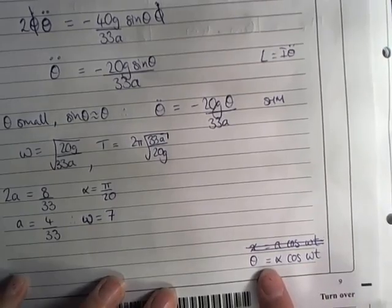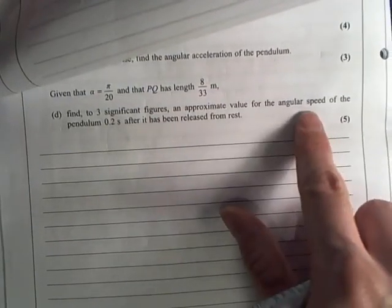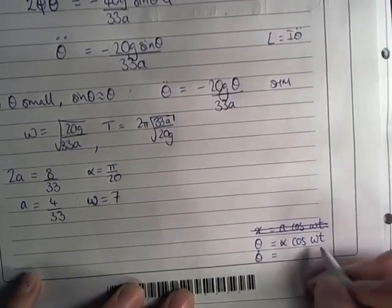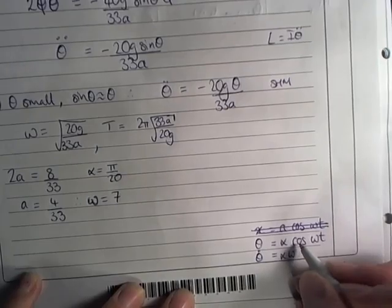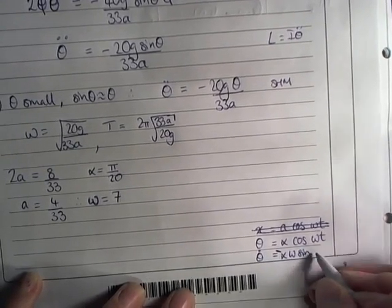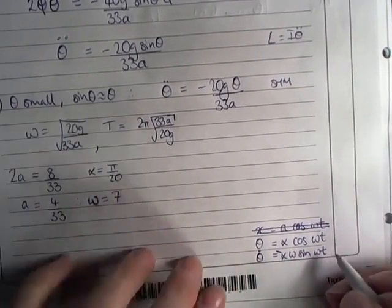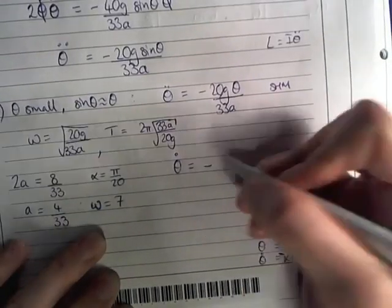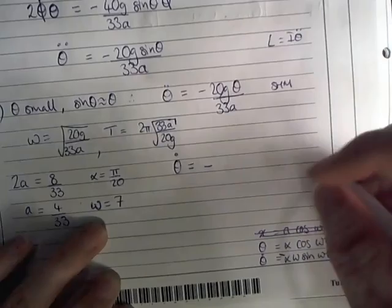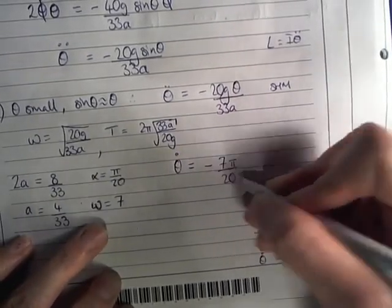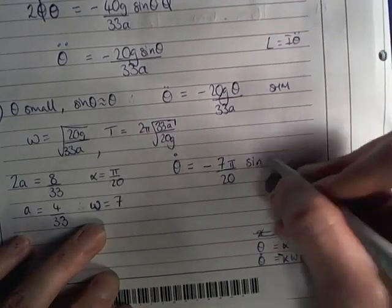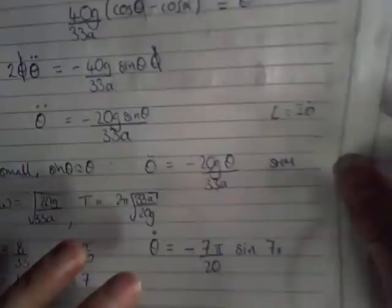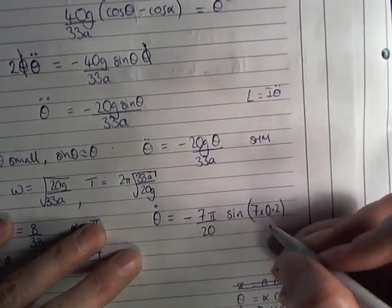So this is the relationship that we are using. But we are looking for the angular speed. So therefore, we're interested in theta dot. Theta dot will be alpha omega. This will become negative sine omega t by differentiating this. So theta dot will equal negative omega alpha, which multiplied by omega, so 7 pi over 20 multiplied by sine of 7 times the value, the time that I'm interested in, which was 0.2 times 0.2.